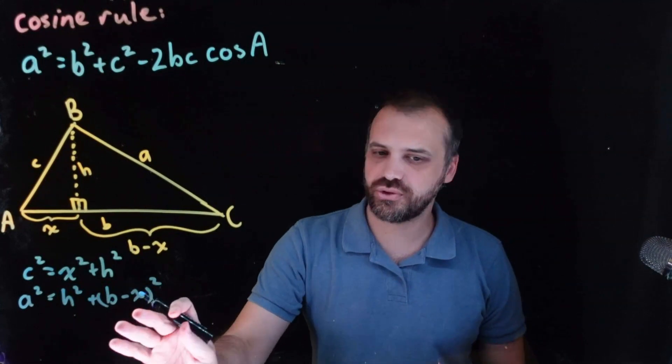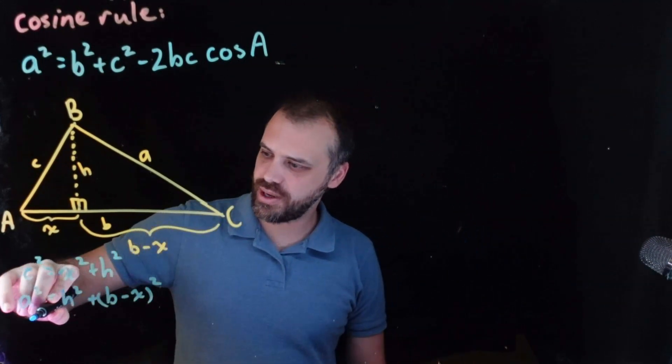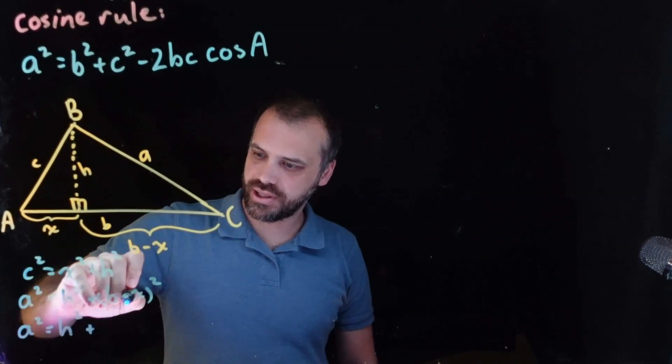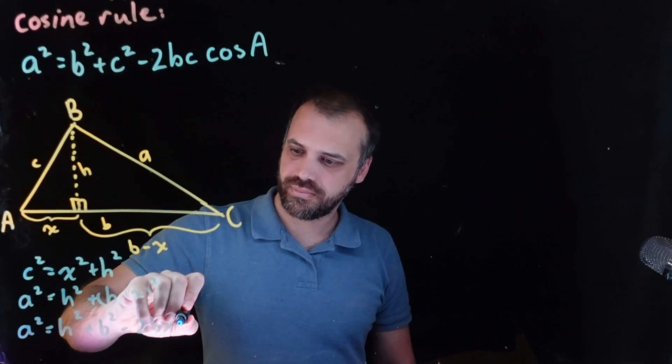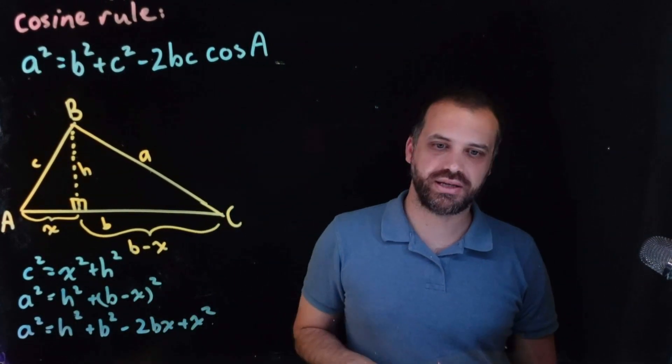Okay, and we can of course expand, if we focus on our second one here, we can expand that to be A squared equals H squared plus B squared minus 2BX plus X squared. Just by expanding that.